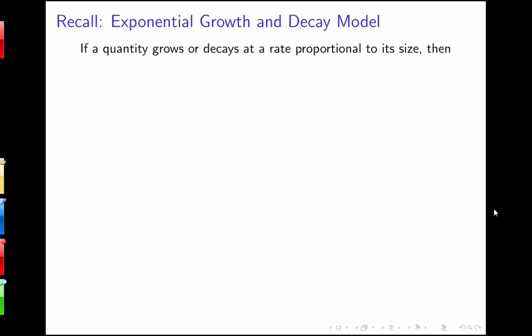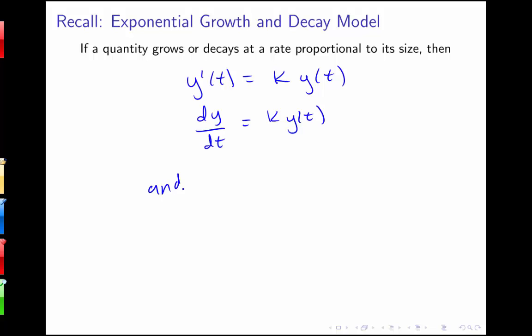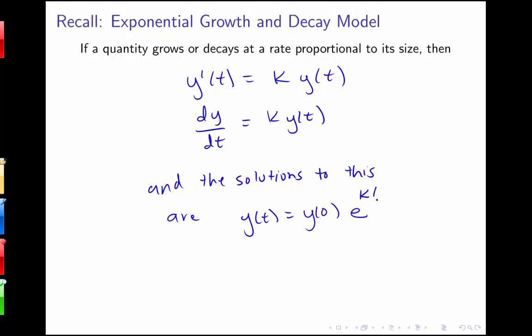In this lecture we're going to be talking a little bit more about exponential growth and decay. To recall what this model is about, if a quantity grows or decays at a rate proportional to its size, then y prime of t equals k times y of t, or dy/dt equals k times y of t. The solutions to this are y of t equal to the initial value times e to the kt.